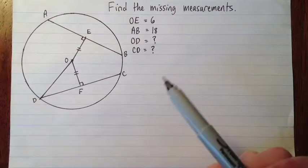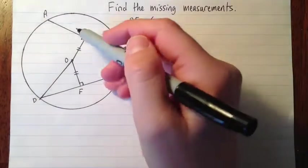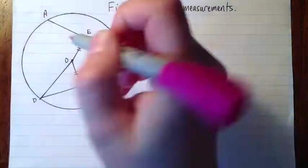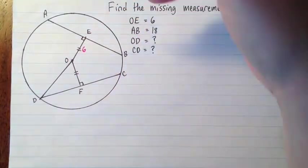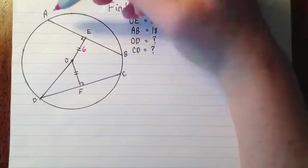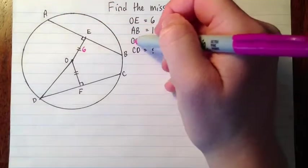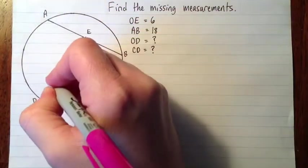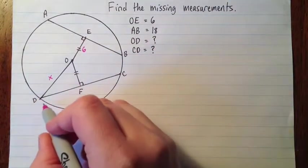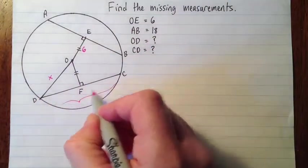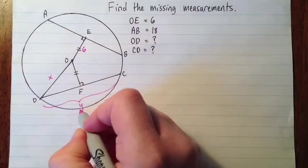What we know is OE is 6. I'll label that right away. We know that AB is 18. And we're supposed to find OD. So that's here. I'll call that X. And then CD. Let's call that Y.